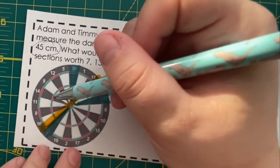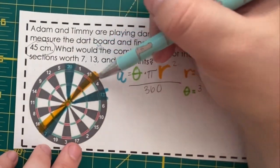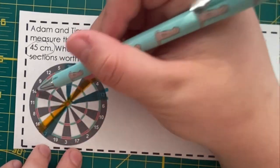I'm going to count the total number of sections. I'm going to start at 20 so I don't double count anything. 1, 2, 3, 4, 5, 6, 7, 8, 9, 10, 11, 12, 13, 14, 15, 16, 17, 18, 19, 20.